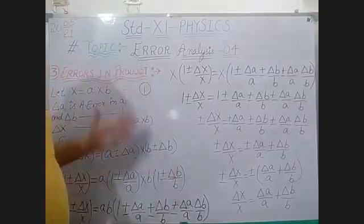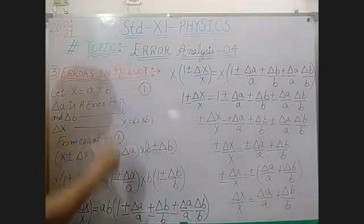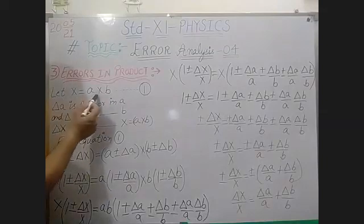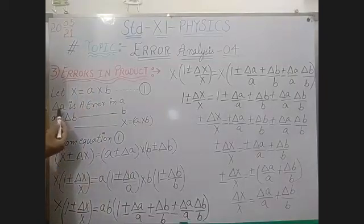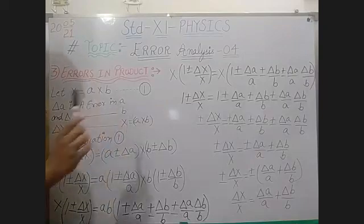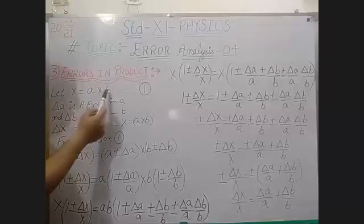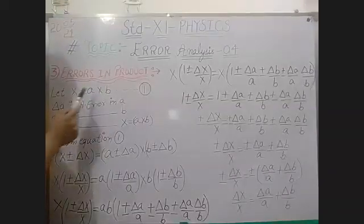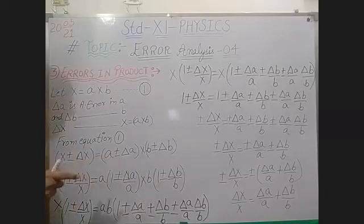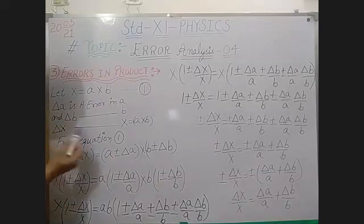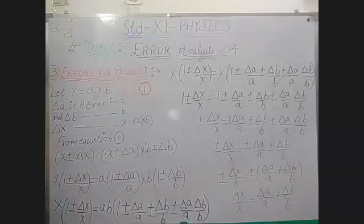Today our topic is error analysis part 4. In this topic you have to learn about errors in a product. Let x = a × b. There is an absolute error delta_a in a and delta_b in b. If there is an error delta_a in a and delta_b in b, then the product gives you the value of x, and in x there will be some error. Assume delta_x is the error in x, which you calculate by taking the product of these two quantities.